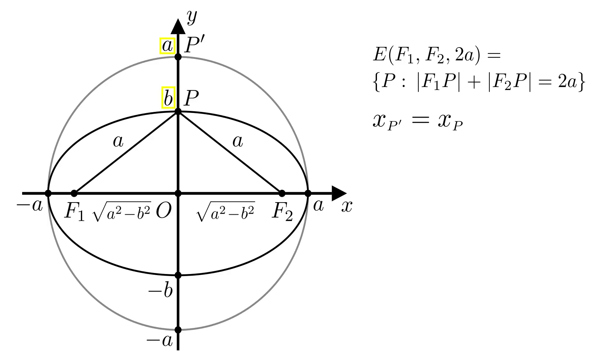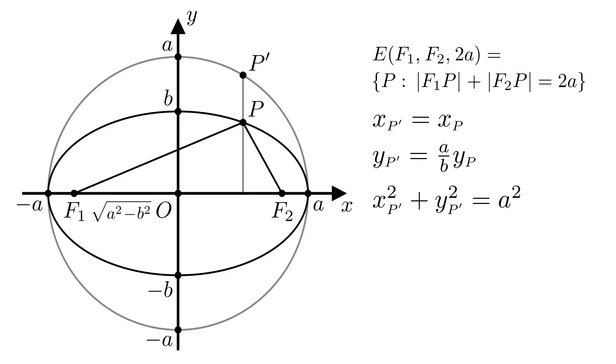While the y-coordinate of P' is equal to a over b times the y-coordinate of P. And this relation between coordinates is true for every pair of corresponding points P and P', but P' is on the circle of radius a, which means that xP' squared plus yP' squared is equal to a squared. We'll substitute xP' and yP' with corresponding expressions. And we get xP squared plus a over b times yP squared is equal to a squared. From there we get the expression for yP squared.